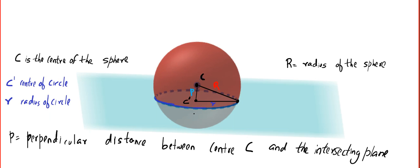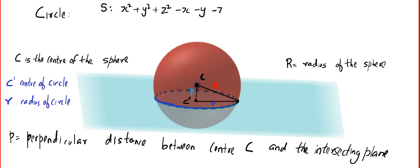They used the word circle, but what did they give you? They gave a sphere, and the sphere is x² + y² + z² − x − y − z = 0. And they have given a plane — the blue color surface — that is x + y + z = 1. I am going to take it to the left side.